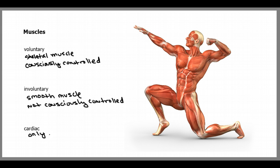Cardiac muscle is only found in the heart. And it is involuntary, and has a property called automaticity, which means it's able to create and generate its own electrical impulses. And that concludes this video on the musculoskeletal system.